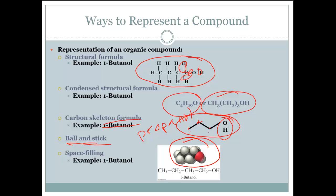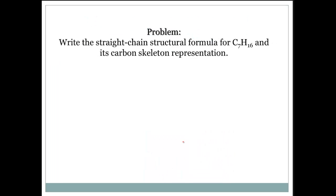Alright, so let's practice drawing some of these. C7H16. Let's draw the structural formula first. So that means we're going to have seven carbons in a row. One, two, three, four, five, six, seven.